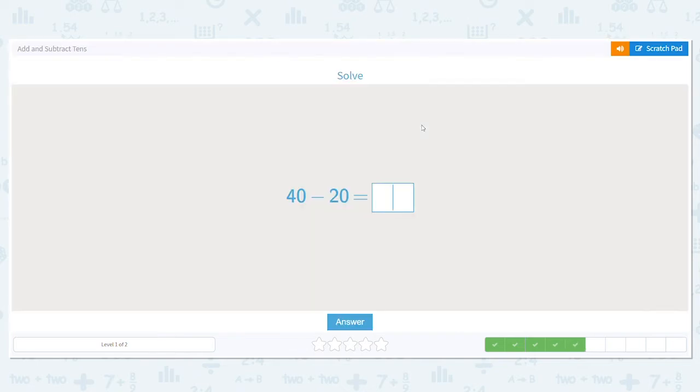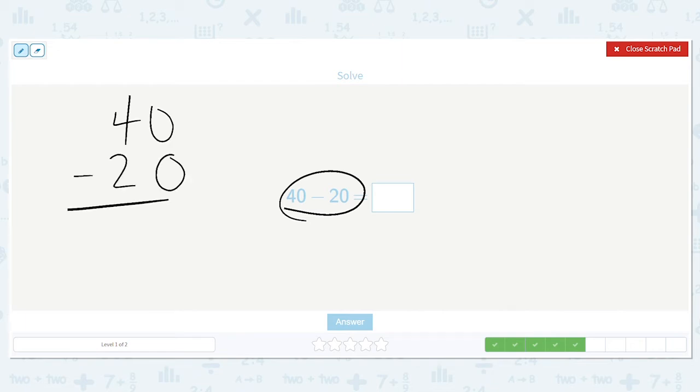This time, what do we notice? We're subtracting. So we're taking away. Now, if this is a little tricky for you, there's two different ways we can do it. The first way is to straight up subtract. 40 minus 20 equals 20. You start in the ones, subtract, and then do the tens.